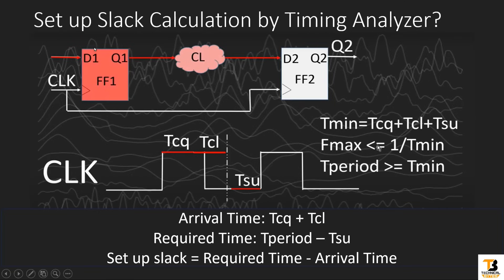Now let us see how the timing analyzer tool calculates the setup slack. We saw the expression: minimum time period of operation equals TCQ plus TCL plus setup of the second flip-flop. But as I mentioned, the tool does not report T-minimum — it reports slack for every register-to-register path. To calculate slack, it uses two important terms. One is called arrival time: the delay of the first flip-flop plus the delay of the combination logic, i.e., TCQ plus TCL. The other term is required time: the time period of operation minus T-setup of the second flip-flop.